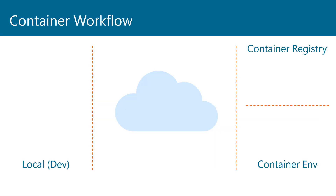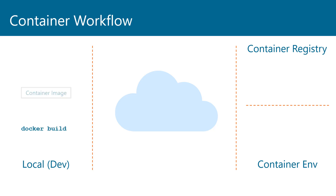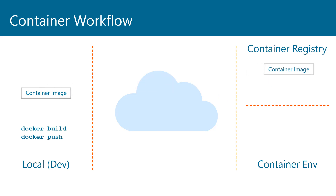The container workflow looks something like this: starting with a local dev environment, you write a Dockerfile — essentially a script that tells Docker how to build a Docker image. You run Docker build, which converts the Dockerfile and all its components into a local Docker image. Then you run Docker push, which takes that image and pushes it to a container registry.